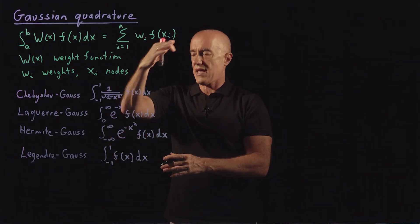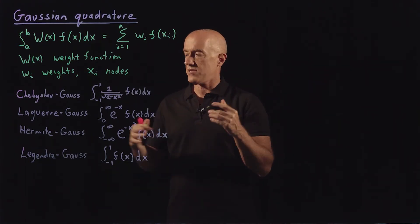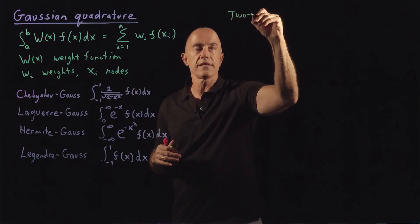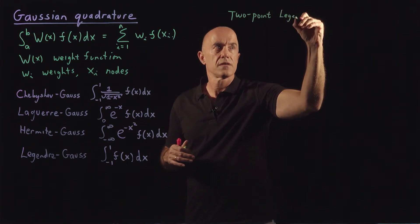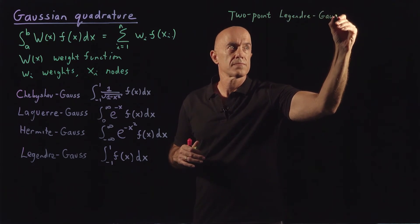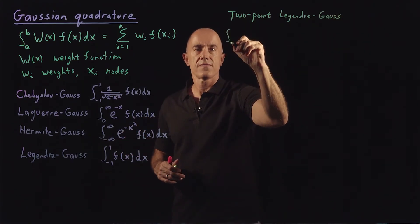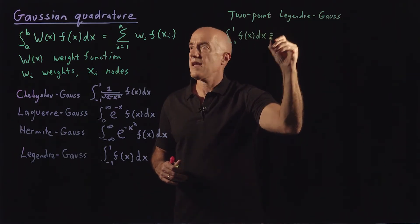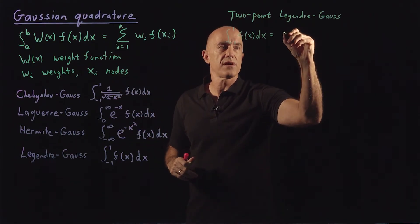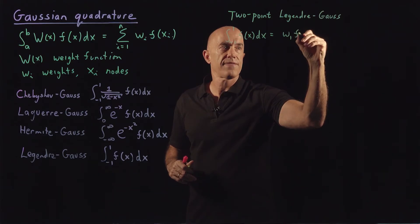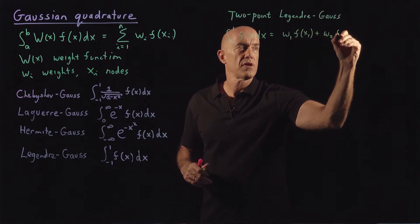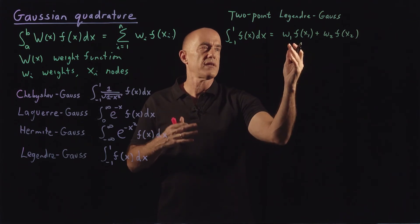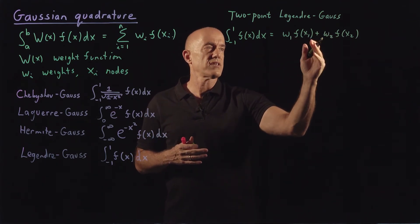Let me show you how one would compute the weights and the nodes. Let's look at a two-point Legendre-Gauss quadrature. We have the integral from minus one to one of f(x) dx, and with only two points this would equal w_1 f(x_1) plus w_2 f(x_2). The goal is to determine w_1, w_2, x_1, and x_2.